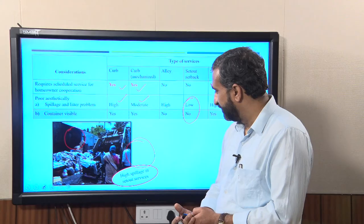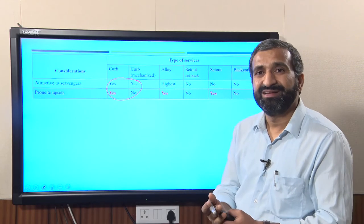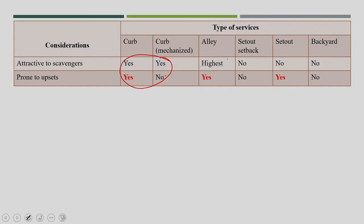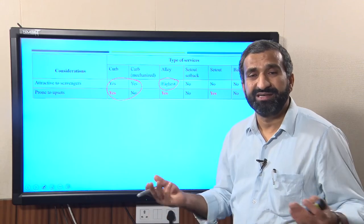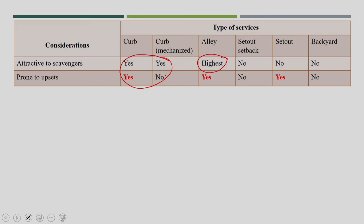There is some spillage in set-out service but no spillage in the backyard area. Another consideration is attractiveness to scavengers: curb service is highly attractive to scavengers and very prone to upsetting. Mechanical unloading is not prone to upsetting but is still highly attractive to scavengers — which could be animals or rag-pickers. LA service is the highest for scavenging because small quantities make recyclable matter easy to extract, and in India, most recyclable materials are collected by rag-pickers. In set-out set-back service, there would not be any scavenging.